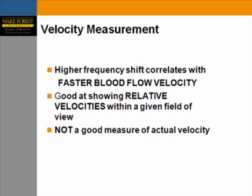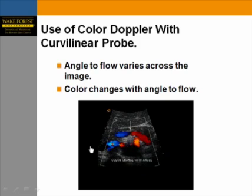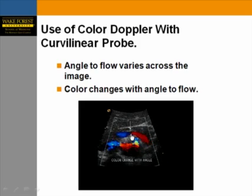On velocity measurements: higher frequency shift correlates with faster blood flow velocity, and it's good at showing relative velocities within a field of view, but it is not a good measure of actual velocity. Also, the angle of flow varies across the image due to probe curvature and design. For example, the splenic vein at the level of the pancreas changes color from towards the probe to away from the probe at the midline — this is normal accepted variation.